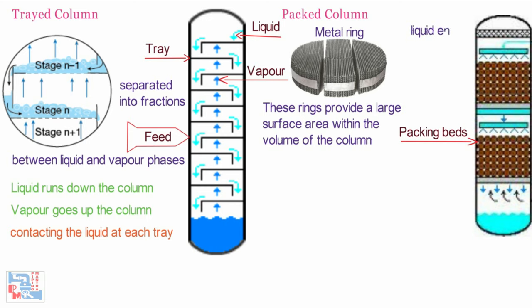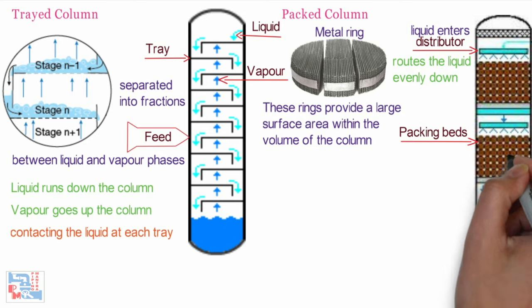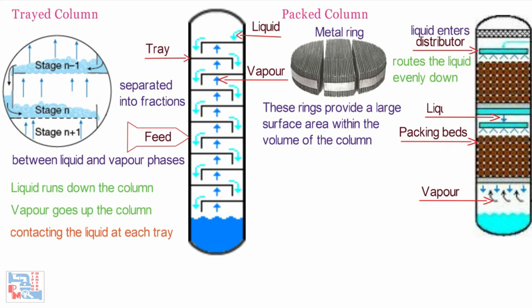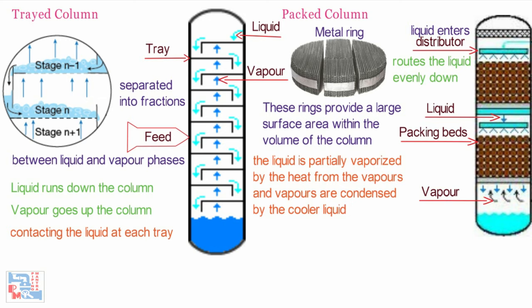On entering the column, liquid enters the distributor that routes the liquid evenly down through the packed bed of metal rings. Rising vapors passing through the beds come into contact with the descending liquid. In a manner similar to tray column operations, the liquid is partially vaporized by the heat from the vapors and vapors are condensed by the cooler liquid.